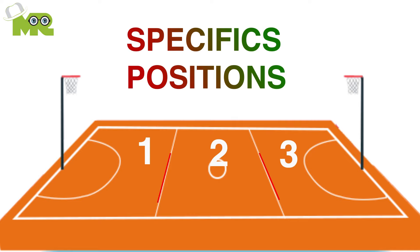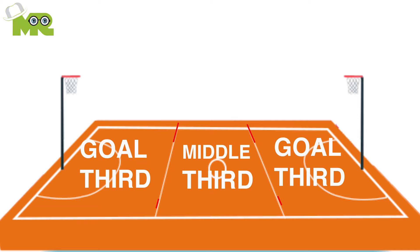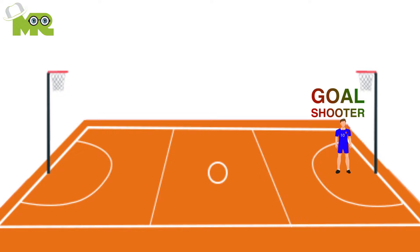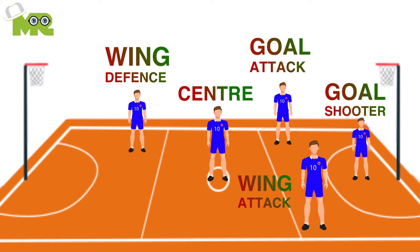3. The sections are referred to as the two goal thirds and the center or middle third. 4. In netball, these set positions limit where the player can be on the court: 1. Goal shooter. 2. Goal attack. 3. Wing attack. 4. Center. 5. Wing defense. 6. Goal defense. 7. Goalkeeper.